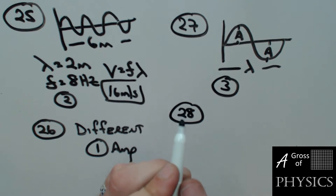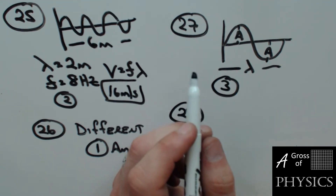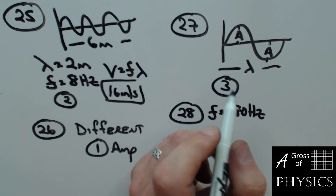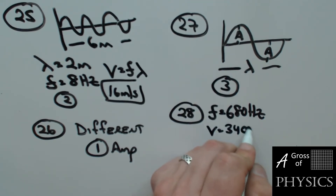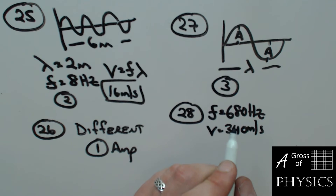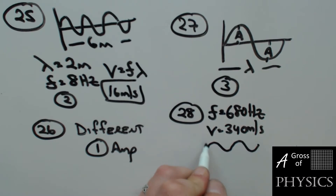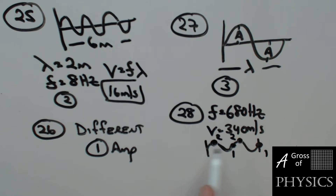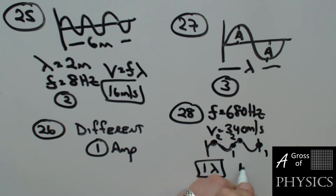Number 28: we have a police car producing a sound with a frequency of 680 hertz, and the speed of sound is 340 m/s. Sound waves are in phase at points A and B. The distance between them could be what? To be in phase, you must be a whole multiple of wavelengths away. So the distance has to be a whole number of wavelengths, meaning the only valid choice is choice one.